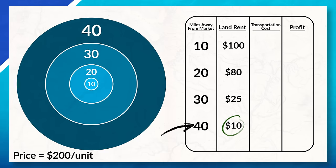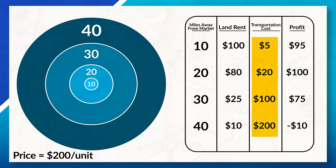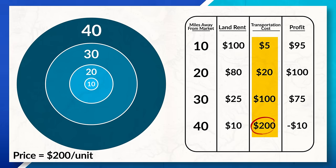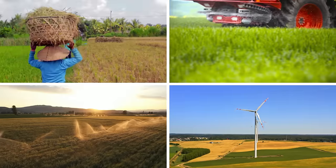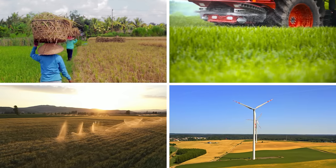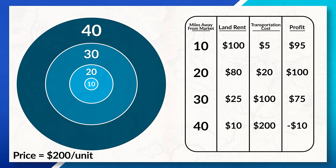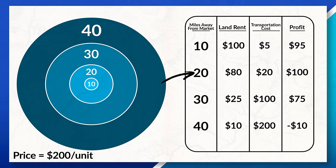You might think you should locate your farm 40 miles away from the market to spend only $10 a month on land and maximize profit. But that would mean forgetting to factor in transportation costs. If you locate 40 miles away, it'll actually cost you $200 to transport your product to the market, essentially wiping out all of your profits — and that doesn't even account for other production costs like labor, fertilizer, water, and electricity. In the end, it would be best to locate 20 miles away, where you pay $20 for transportation and $80 for land, maximizing your possible profit.